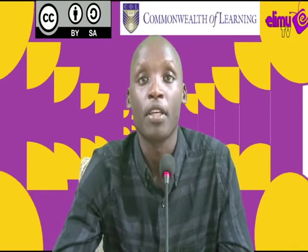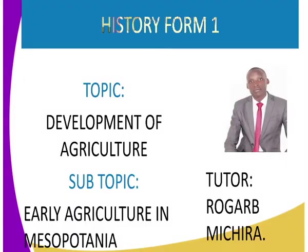Remember in the last lesson we discussed the earliest crops and the earliest animals man domesticated — for example a dog, a cow, a goat, a sheep. In crops we had wheat, millet, sorghum, barley, rice and maize. In today's class we'll get to early agriculture in Mesopotamia.